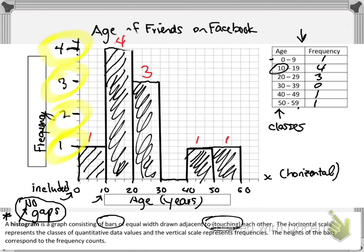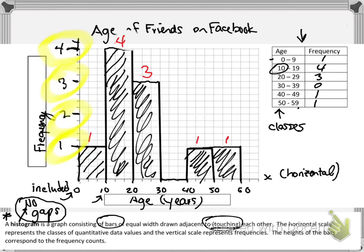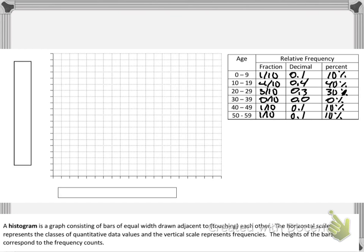We're going to do the exact same thing. The only thing we're going to change in this slide is that instead of graphing regular frequency where we had 1, 4, 3, 0, 1, and 1, we're going to be graphing our relative frequency.